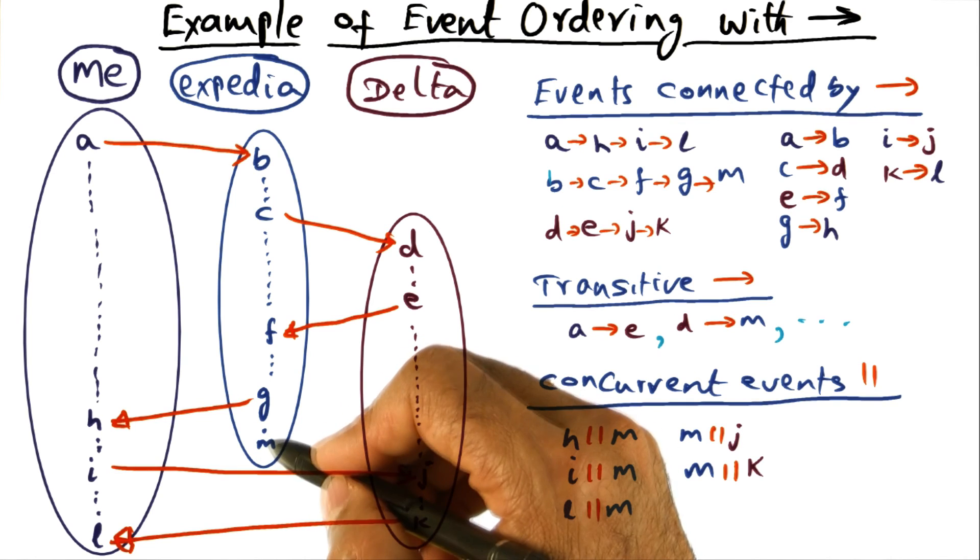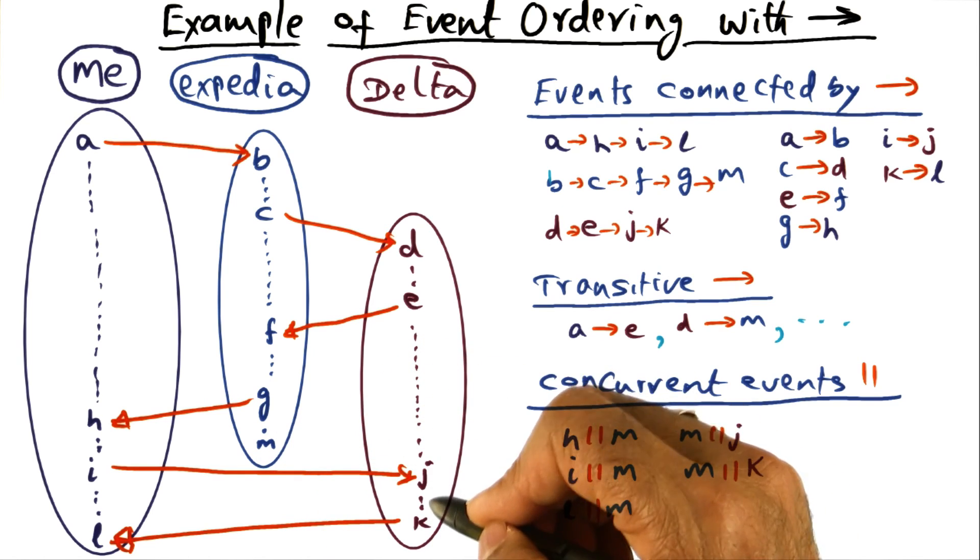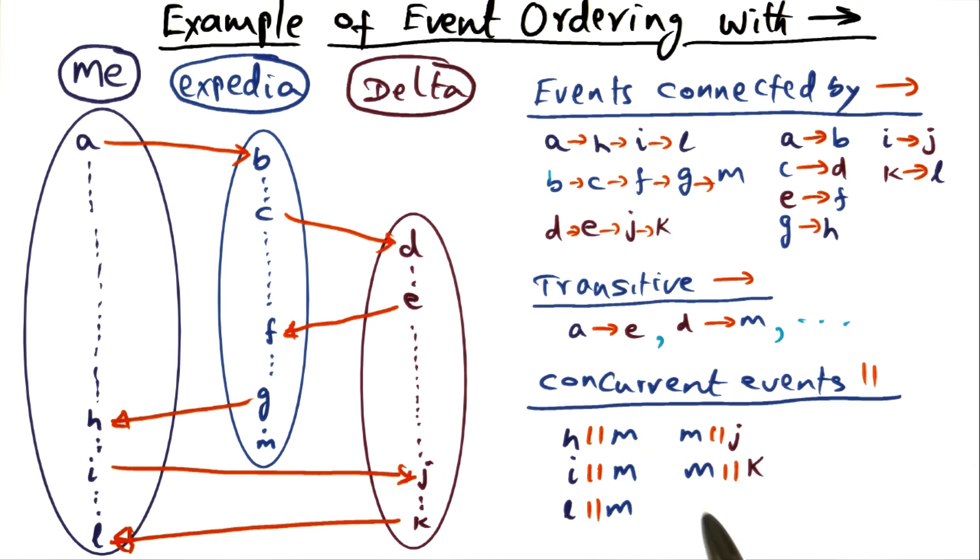but there could be events that are happening in the distributed system that are unconnected to other events, and those are concurrent events.